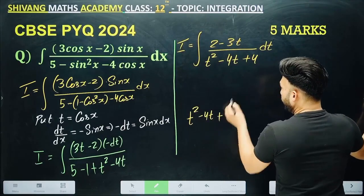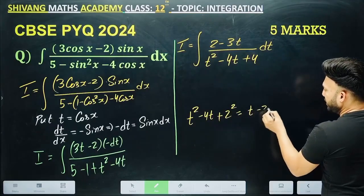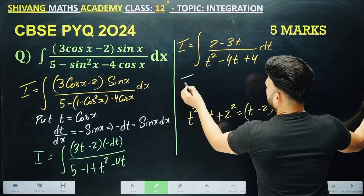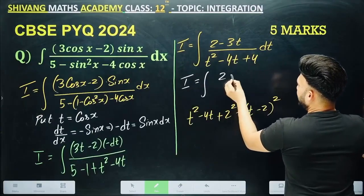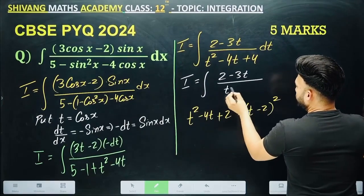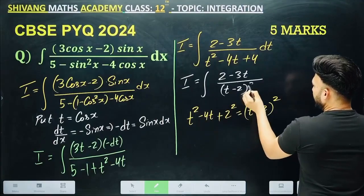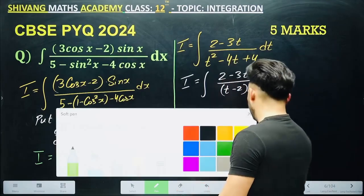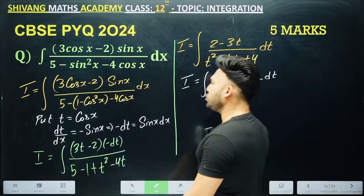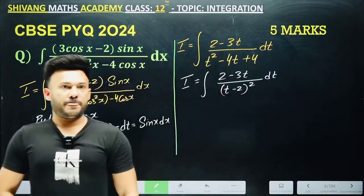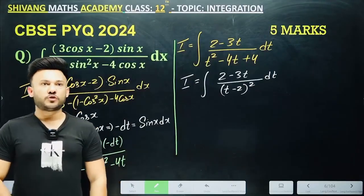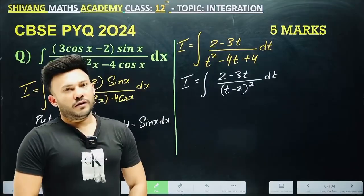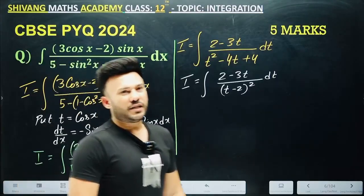Now, look carefully — the denominator t squared minus 4t plus 4 can be written as (t minus 2) squared, since 4 equals 2 squared. This is the a minus b squared form. So write the denominator as (t minus 2) squared. One approach is to apply partial fractions; let's do it with partial fractions.